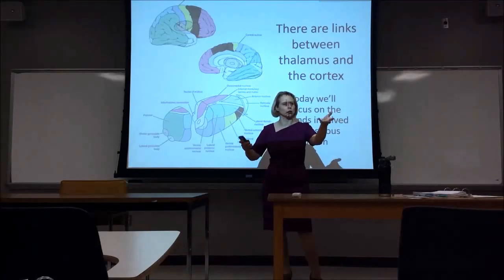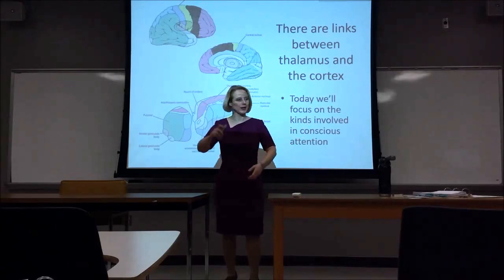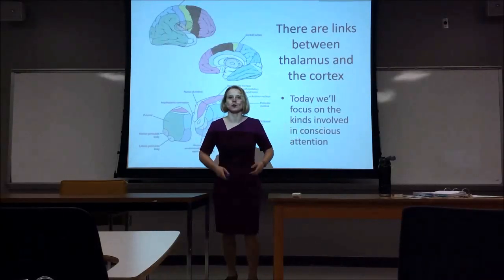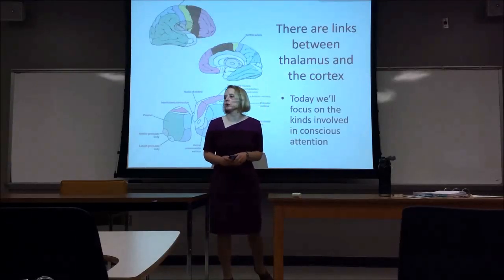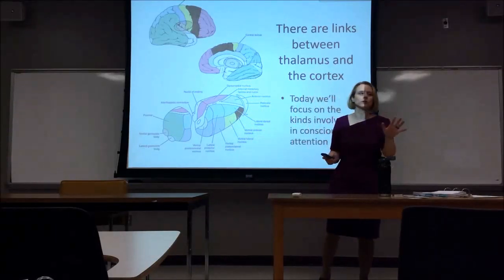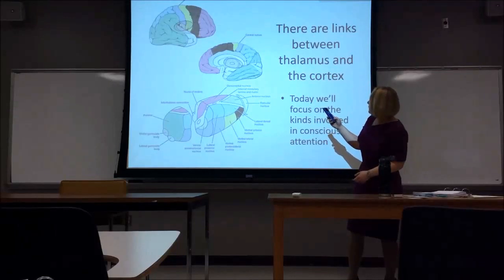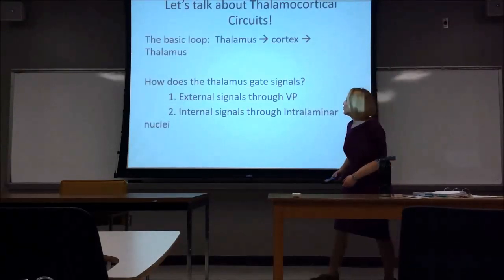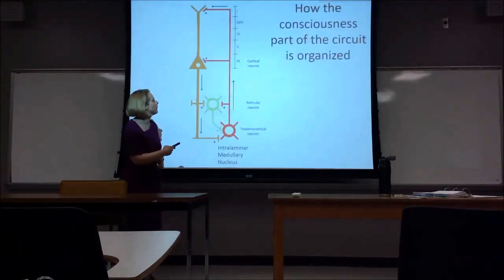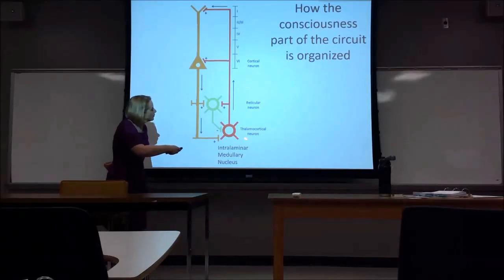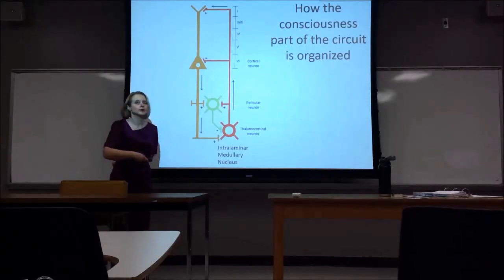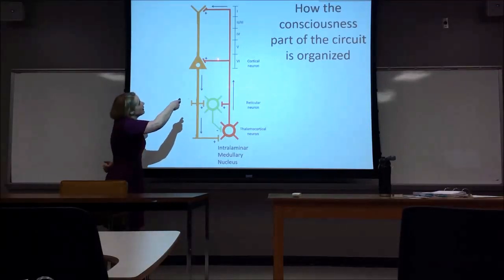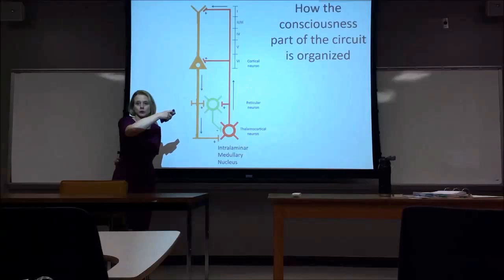Why is it called striate? It is striated — it has striations, which means vertical stripes. It's a fancy word for stripy, and you can actually see it being stripy. Now, the basic loop: we have our intralaminar thalamic nuclei, and coming up through the reticular neurons — the reticular nucleus that is wrapped around the thalamus — we come up to the cortical neurons in the striate cortex, those six layers of the visual cortex.